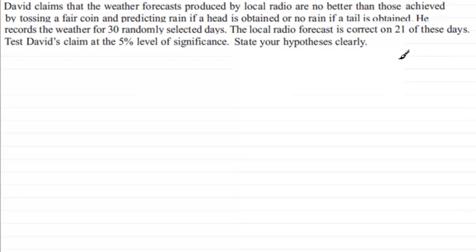So let's just read through this. David claims that the weather forecast produced by local radio are no better than those achieved by tossing a fair coin and predicting rain if a head is obtained, or no rain if a tail is obtained. He records the weather for 30 randomly selected days, and the local radio forecast is correct on 21 of these days. We've got to test David's claim at the 5% level of significance and state our hypothesis clearly.